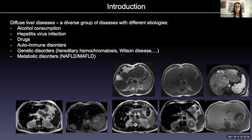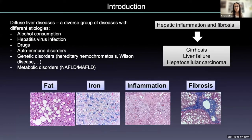Furthermore, a growing cohort of patients is now being referred for the assessment of liver steatosis, iron overload disorders, and fibrosis. Diffuse liver diseases have in common that they all may progress with increasing rates of inflammation and fibrosis, and ultimately they can lead to cirrhosis, liver failure, and HCC.